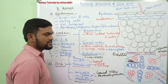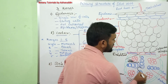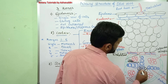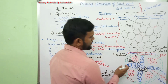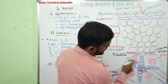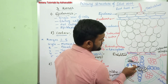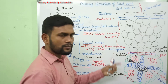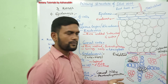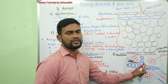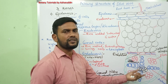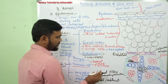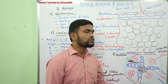Medulla is the central part of the dicot root, composed of thin-walled parenchymatous cells. Generally, the metaxylem elements extend from all sides and occupy the center, so medulla may be absent or small in dicot roots. If medulla is present, it is useful for the storage of food materials.